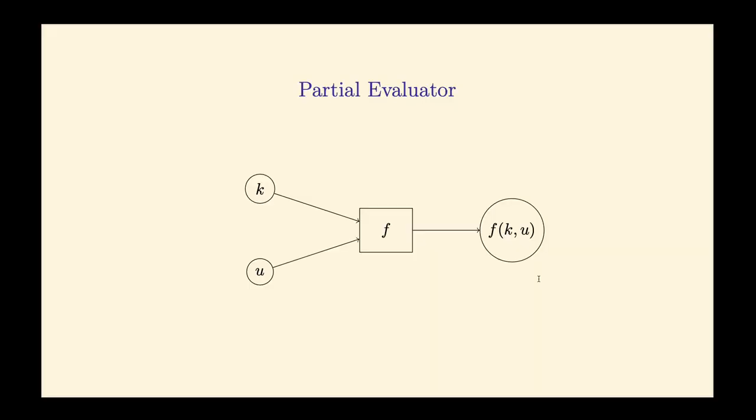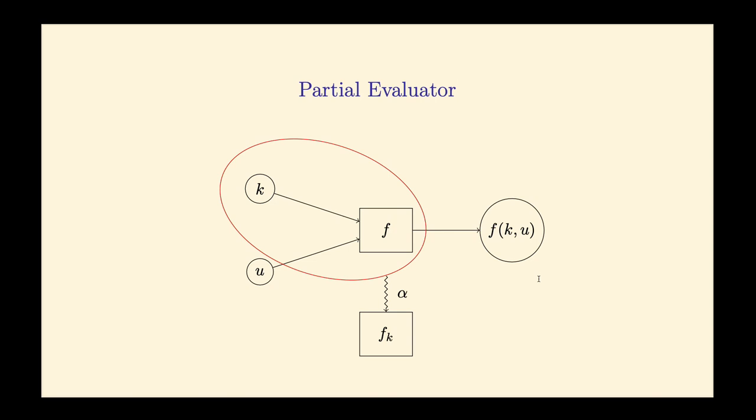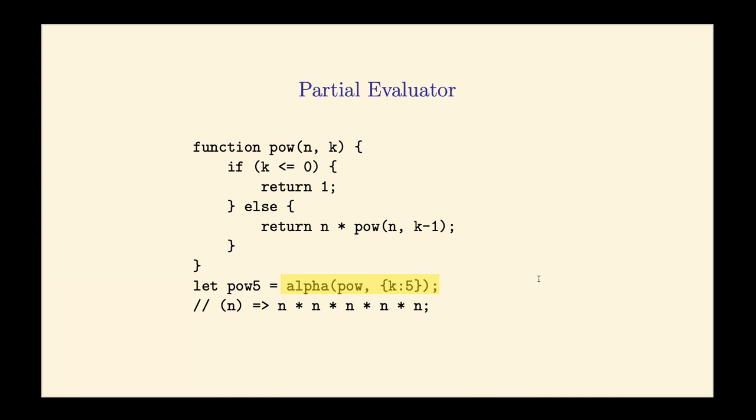We take F and a parameter K, apply alpha, and get the projection of F at K. Since alpha is a program — not just an abstraction — we could write: alpha(pow, k=5) and it gives us back not just the currying of pow but the rewriting of that function. This is the partial evaluator. The paper presents various use cases for this technique, but today we'll focus on automatically generating a compiler, which is really fascinating.